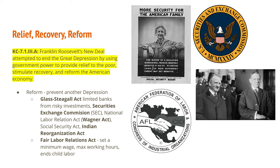The Social Security Act gave a pension for people over the age of 65. The Indian Reorganization Act, part of what is called the Indian New Deal, tried to reverse the negative policies against Native Americans taken since the late 1800s — primarily undoing the effects of the Dawes Act, which had split Native American land among heads of household and sold the rest to land speculators, railroads, and private farmers. The Indian Reorganization Act worked to return that land to Native Americans and allowed them to operate with their own tribal governments as semi-sovereign nations.